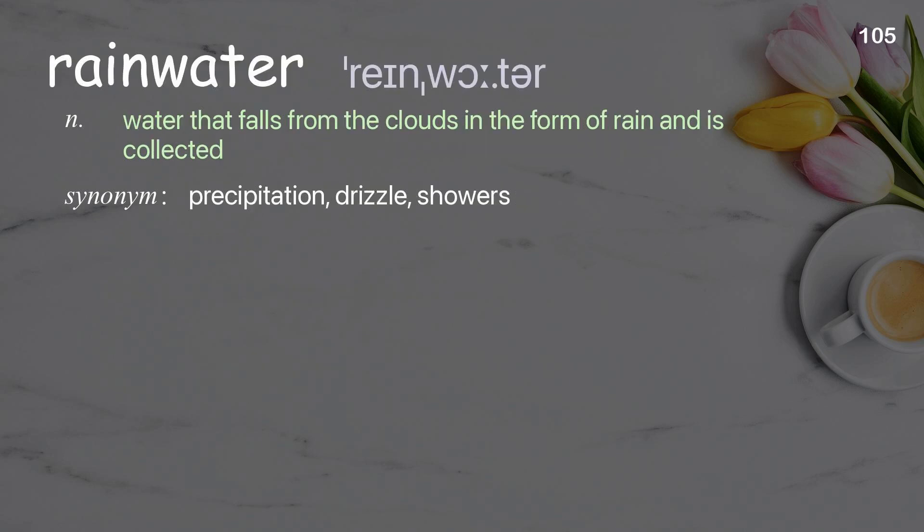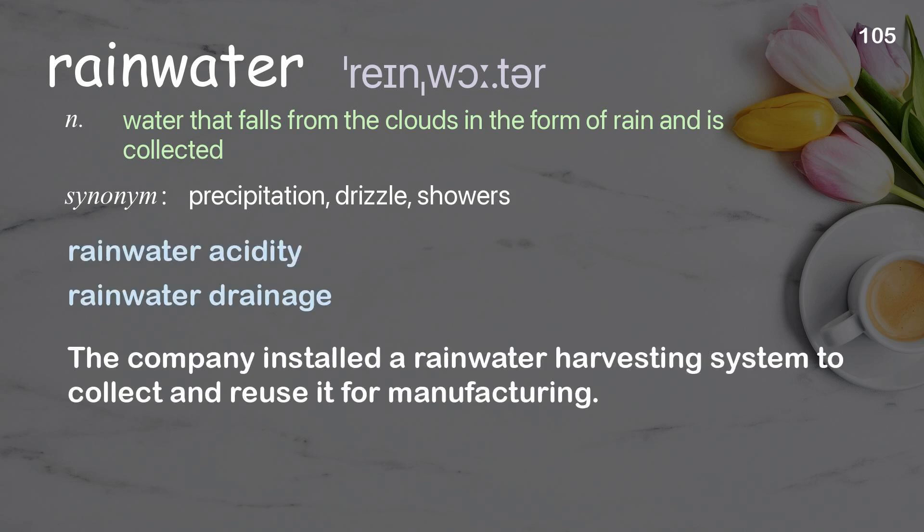Rainwater. Water that falls from the clouds in the form of rain and is collected. Examples: rainwater acidity, rainwater drainage. The company installed a rainwater harvesting system to collect and reuse it for manufacturing.